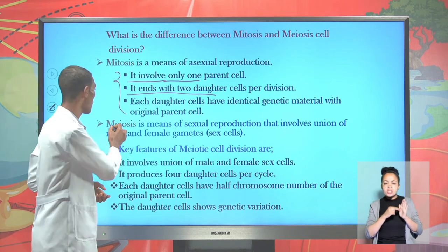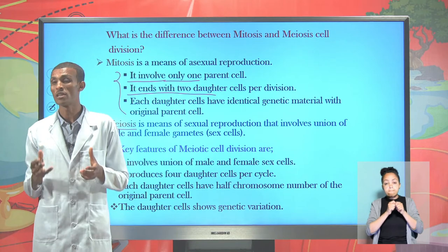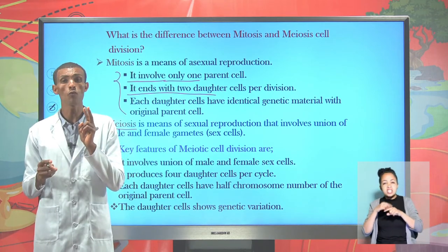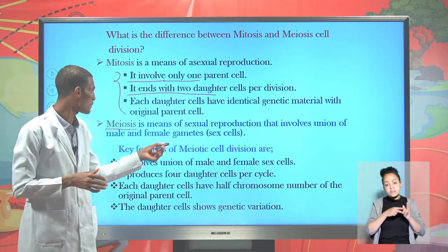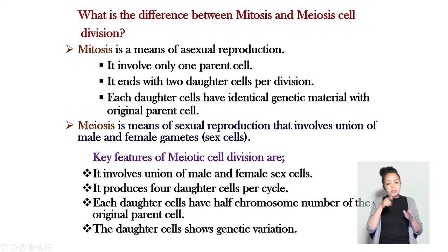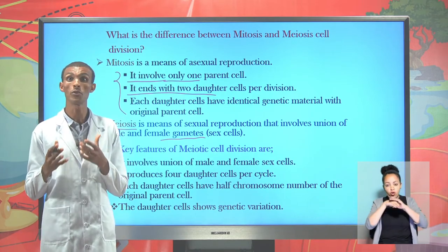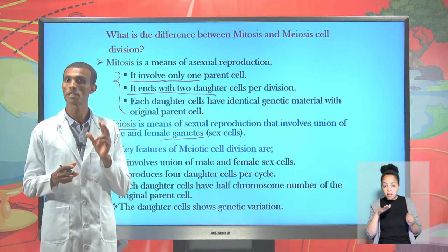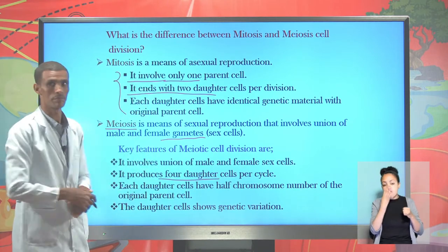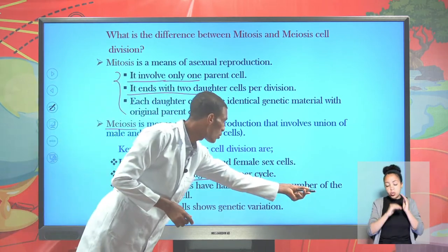Meiotic cell division is a more complex and important type of reproduction that takes place in living organisms, ensuring continuity of species over generations. The involvement of two parents is mandatory, meaning the process takes place through the union of male and female gametes. Key features of meiotic cell division: meiosis involves the union of male and female gametes, requires two parents, and ends with four daughter cells — not two as in mitosis — where each daughter cell has a reduced chromosome number by half.